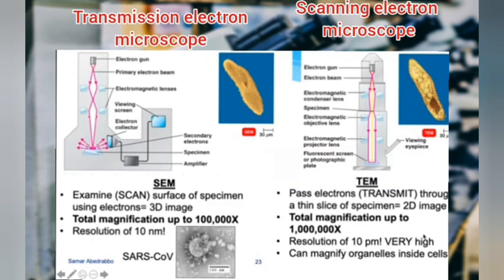Transmission electron microscopes give you a 2D image with very high resolution. Scanning electron microscopes show you the surface of a specimen. Here is an electron microscope image of SARS-CoV — a coronavirus that causes SARS disease. Scanning electron microscopes show the surface of something, while transmission electron microscopes transmit electrons through the specimen to show internal structure.